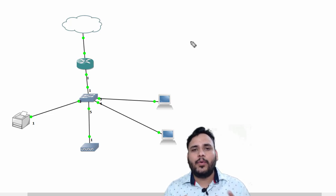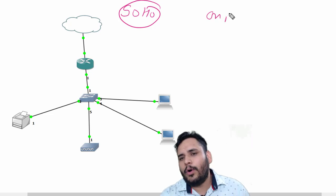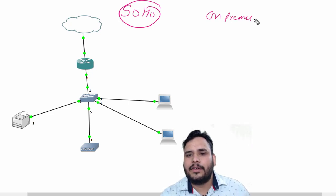So we have two topics which are also going to implement in network topology. One is SOHO architecture and one is on-premises versus cloud architecture.